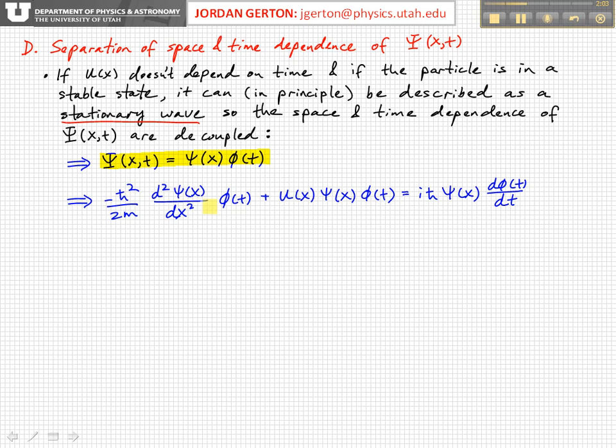If we plug this into the Schrödinger equation, the second spatial derivative only acts on the spatial part, the time independent part psi of x. And so then this is a constant with respect to x. We've multiplied u(x) times psi(x) phi(t), so this is the total wave function. And then again, the time derivative only acts on phi, and psi of x is just a constant with respect to the time derivative.